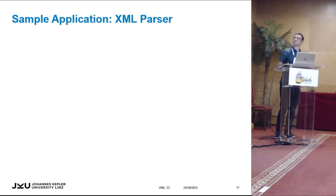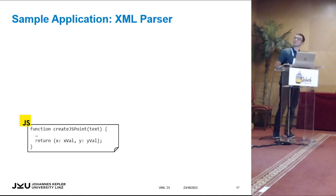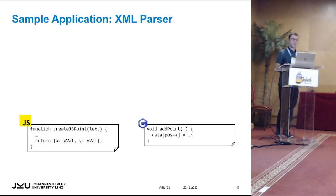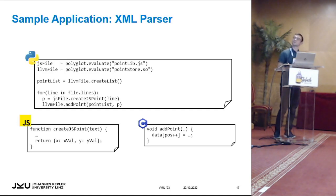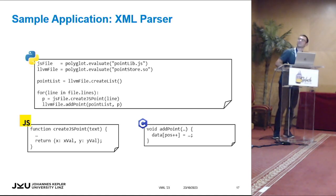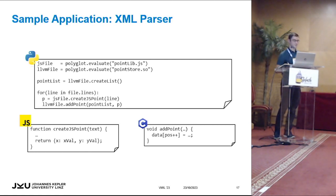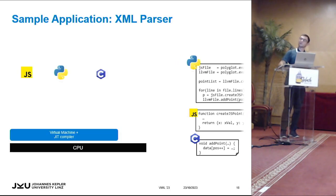Back to the example: we have a JavaScript function that creates point objects from text — a small point parser with x and y values — a C function that takes a point and adds it to a data structure, and the overall orchestration is in Python. In a loop, we iterate a file line by line, create a JavaScript point stored in a Python variable, and pass it to the LLVM code. In GraalVM, language runtimes sit at the top with the GraalVM JIT compiler at the bottom.